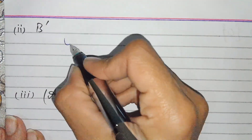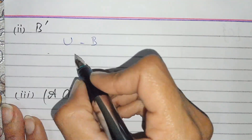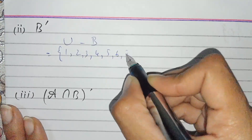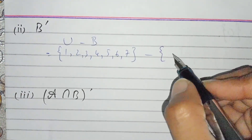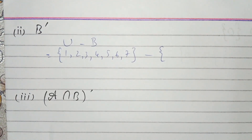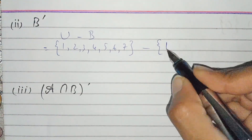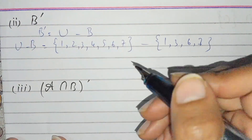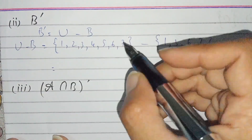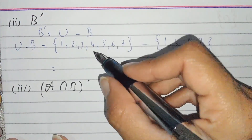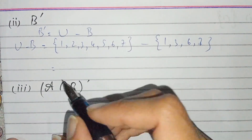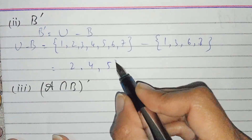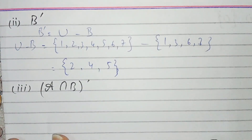Now B complement: U minus B. U is {1,2,3,4,5,6,7} and B is {1,3,6,7}. B complement: we write the values which are present in U but not in B, and these values are {2,4,5}.